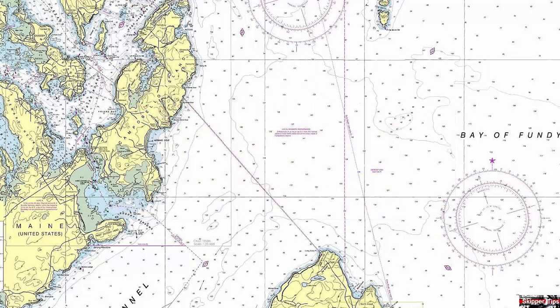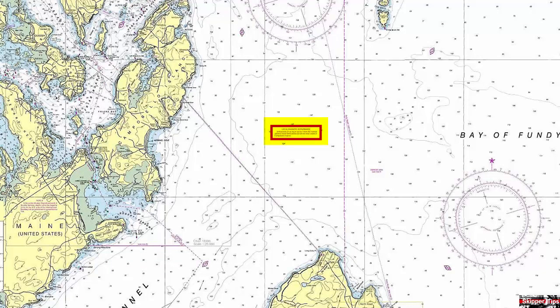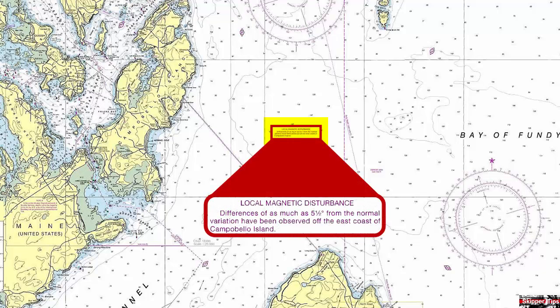Here we are sailing near the Bay of Fundy off the coast of Maine, and we've found a chart note that describes a magnetic disturbance. Let's take a look at a close-up of that note. Differences of as much as five and a half degrees from the normal variation have been observed off the east coast of Campobello Island.